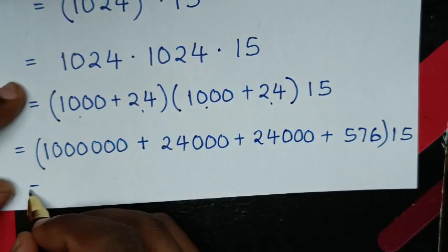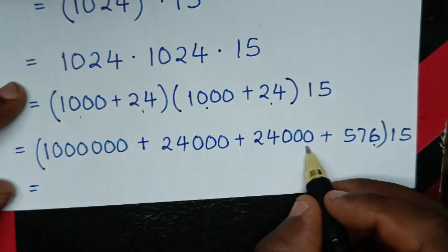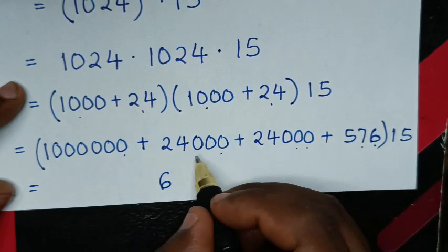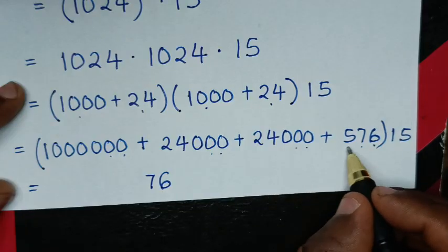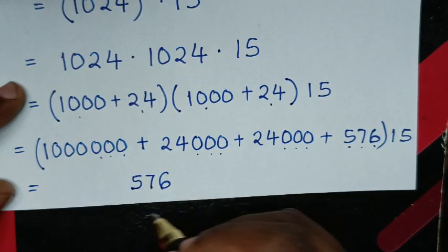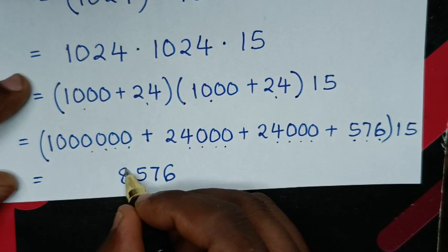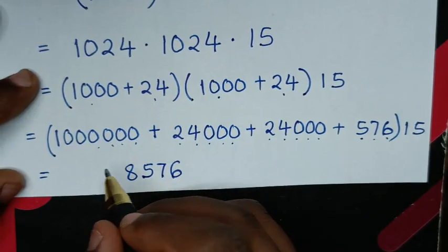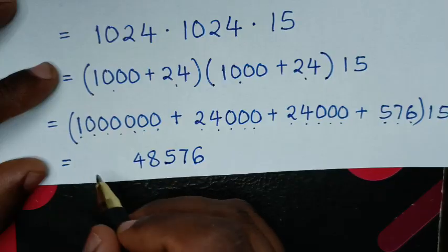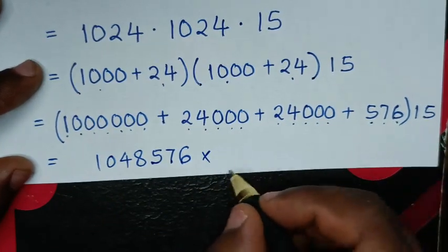Into here, we add inside the bracket: 1,000,000 plus 24,000 plus 24,000 plus 576 equals 1,048,576, times 15.